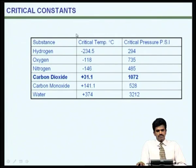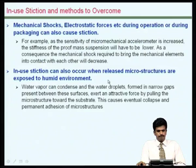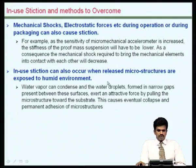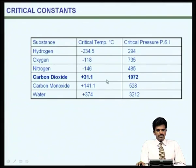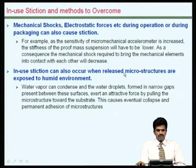Looking at various materials and their critical temperature and pressure, we can see that carbon dioxide has a good advantage because temperatures are well under control. So stiction, if it is happening due to the release etch, can be avoided by using a CO2-based critical drying approach. For instances when stiction happens due to operation, we need to look at other approaches for avoidance — such as hydrophobic surfaces, geometries with reduced areas, or increasing surface roughness.